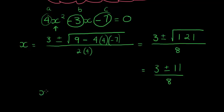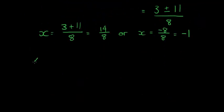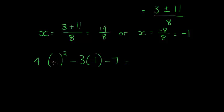So x is either 3 plus 11 over 8 — which is 14 over 8 — or x is equal to 3 minus 11, that's negative 8 over 8, which is equal to negative 1. Those are the two solutions. Shall we test it? 4 times negative 1 squared minus 3 times negative 1 minus 7 equals 4 times 1 plus 3 minus 7, which equals 0. Confirmed!